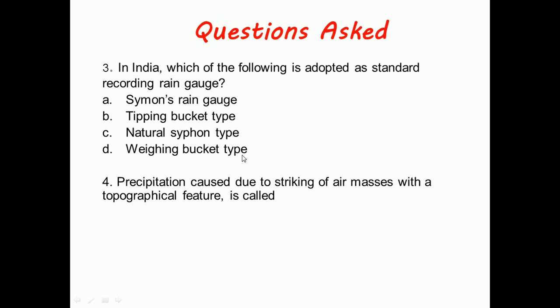Next question: Precipitation caused due to striking of air masses with a topographical feature. Here the topographical feature can be taken as a mountain barrier.